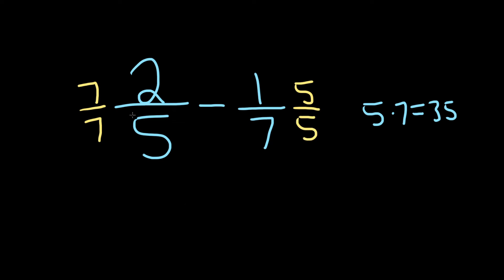Okay, so now let's go ahead and multiply each. 7 times 2 is 14. 7 times 5 is 35. Minus 5 times 1 is 5. 5 times 7 is 35.